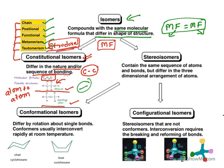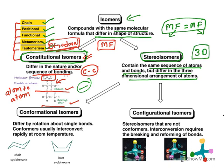Broadly, isomers are classified into constitutional isomers, wherein there is a difference in atom-to-atom connectivity. The other type is stereoisomers. They have the same molecular formula and also the same sequence of atoms and bonds — that means atom-to-atom connectivity is also the same — but they differ in the three-dimensional arrangement of atoms. So in space, how the atoms are oriented differs in stereoisomers. Atom-to-atom connectivity is same but they differ in spatial arrangement.